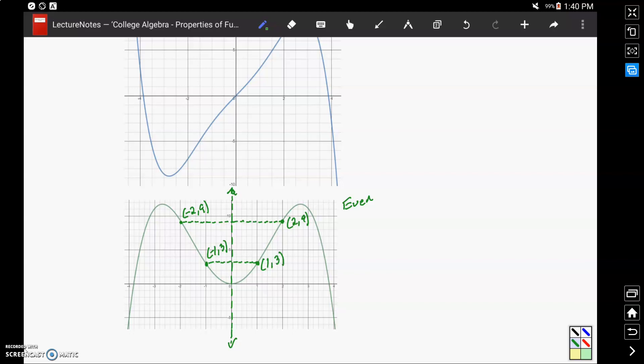And we could continue to identify that mirrored relationship with every single point on the left-hand side and right-hand side of our graph. So having that symmetric nature about the y-axis means our function is an even function.